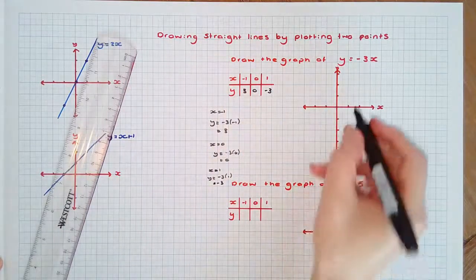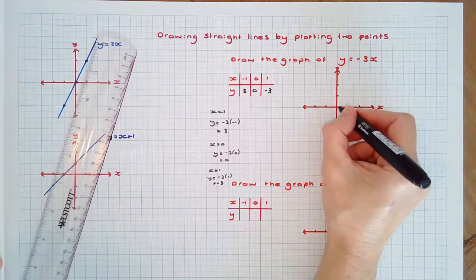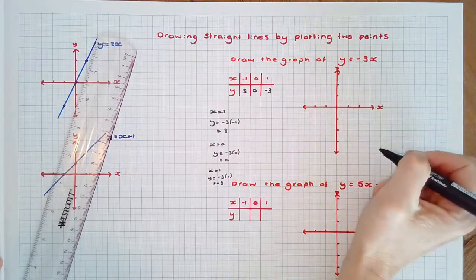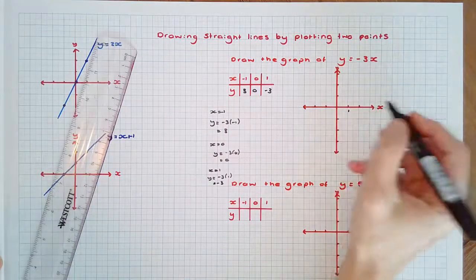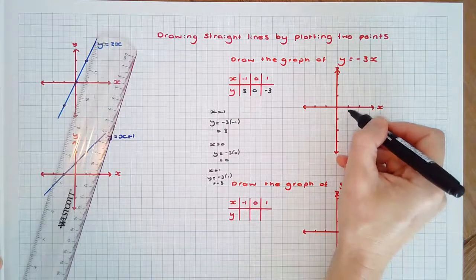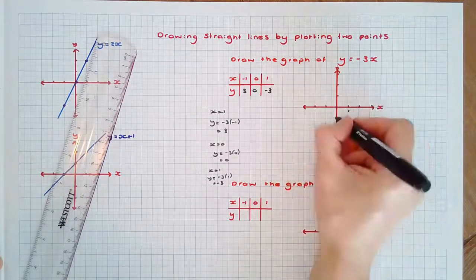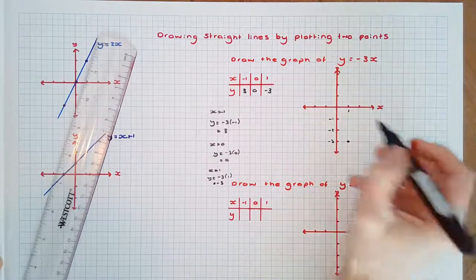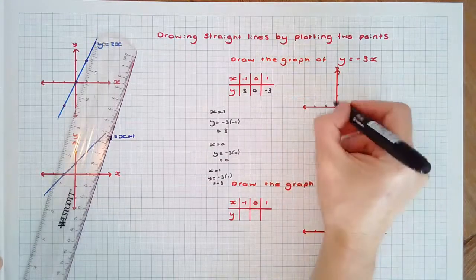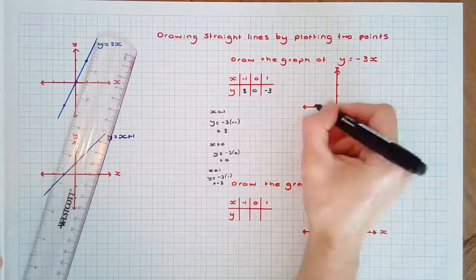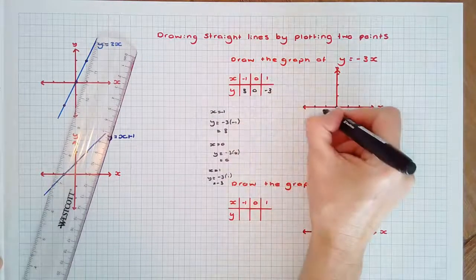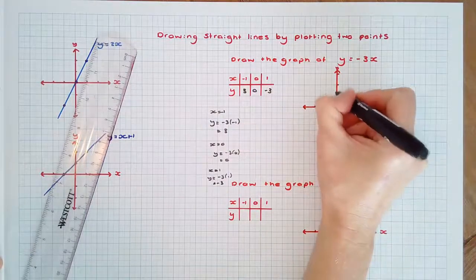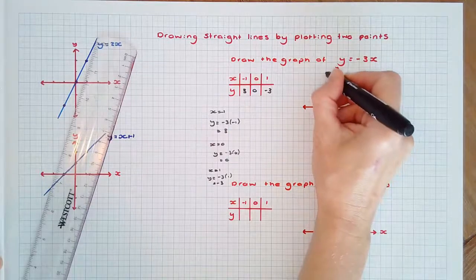Putting these points on the graph, we'll use an interval scale of 1 cm to 1 unit. When x equals 1, y equals negative 3. When x equals 0, y equals 0. And when x equals negative 1, y equals positive 3.